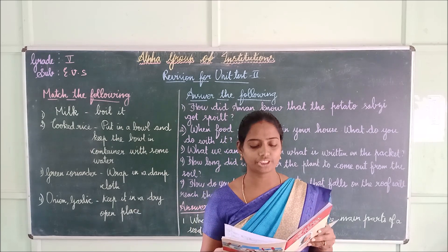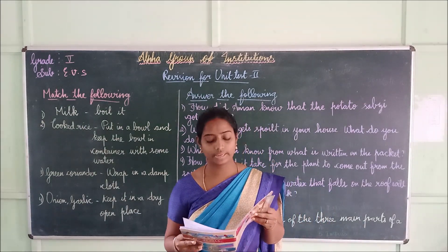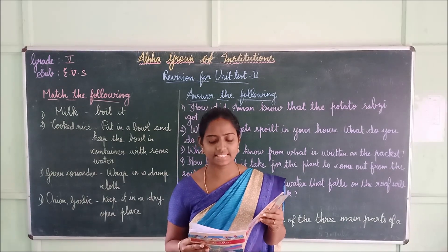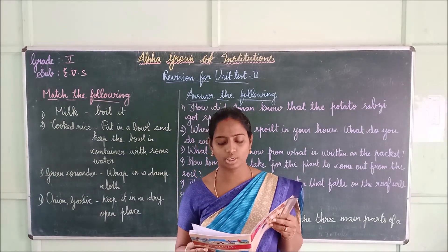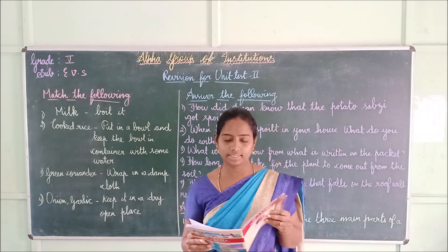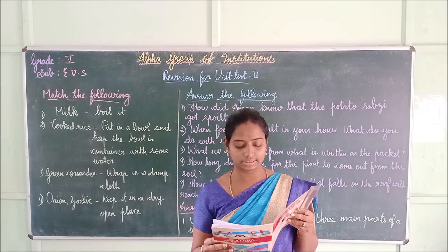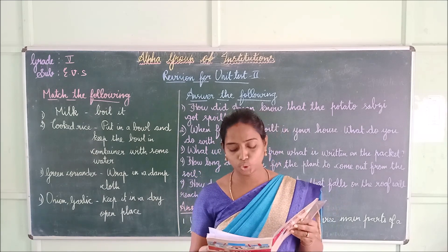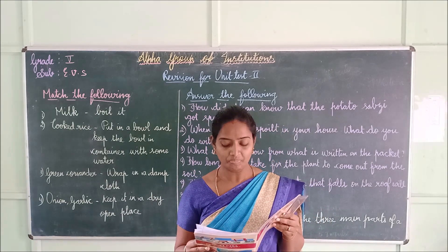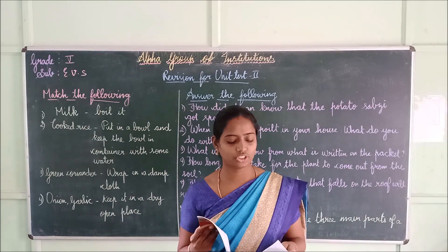Now move to true or false for lesson 5. First: mustard is the biggest seed — false. Second: seeds need moisture, water and sunlight for sprouting — true. Third: that is also true. Fourth: seeds cannot move from place to place — false.